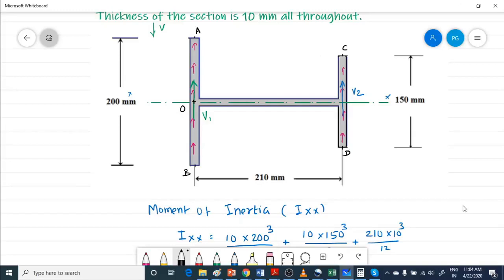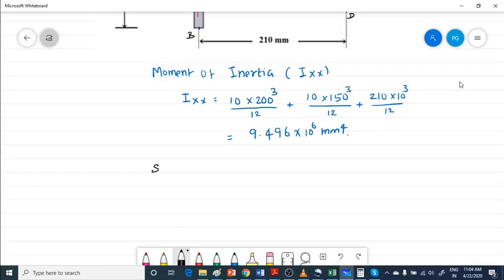Find the shear flow at various points for the left leg as well as for the right leg to find out V1 and V2. The shear flow at point A will be equal to B, because both are edge ends. The shear flow will be zero because there is no area available above A or below B.